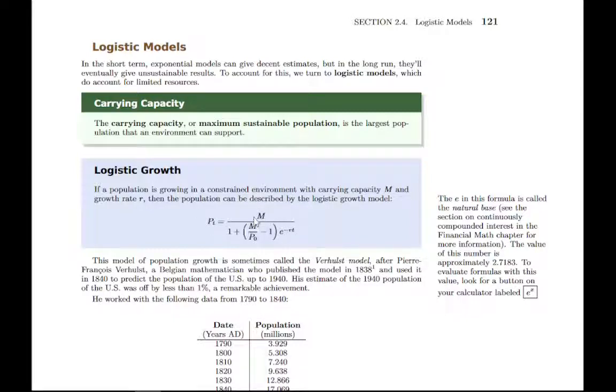So there's a lot of familiar pieces. The one new piece is this m, which is the maximum population, or also called the carrying capacity. So that's the only new piece, everything else is stuff we've seen before.